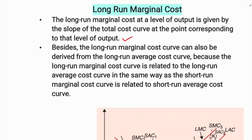Just as we derive the average cost curve, from the long-run average cost curve we derive the long-run marginal cost curve. The slope of the average cost gives us the marginal cost. So as the average cost has a slope, the marginal cost curve has the same type of slope. The long-run marginal cost curve can also be derived from the long-run average cost curve.